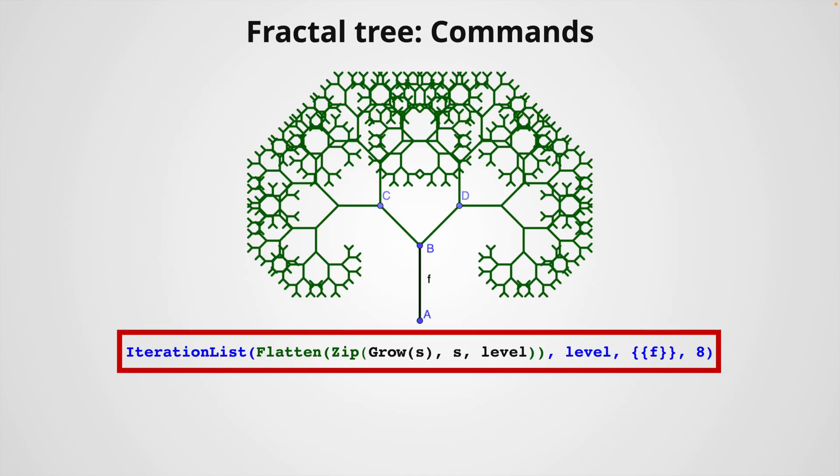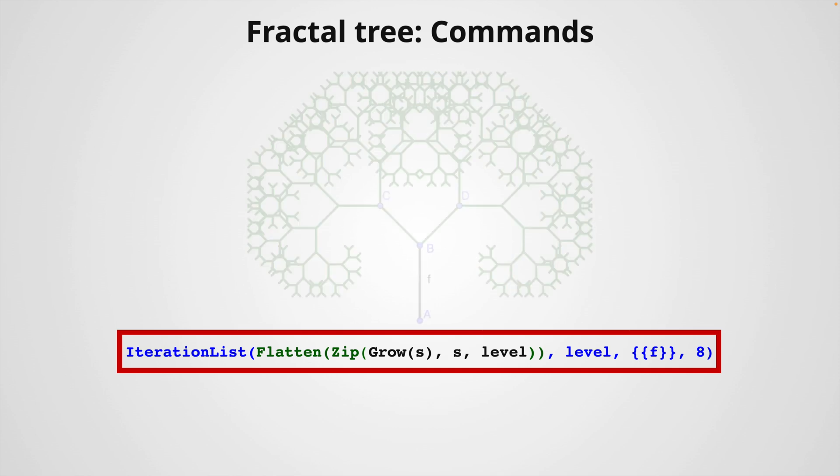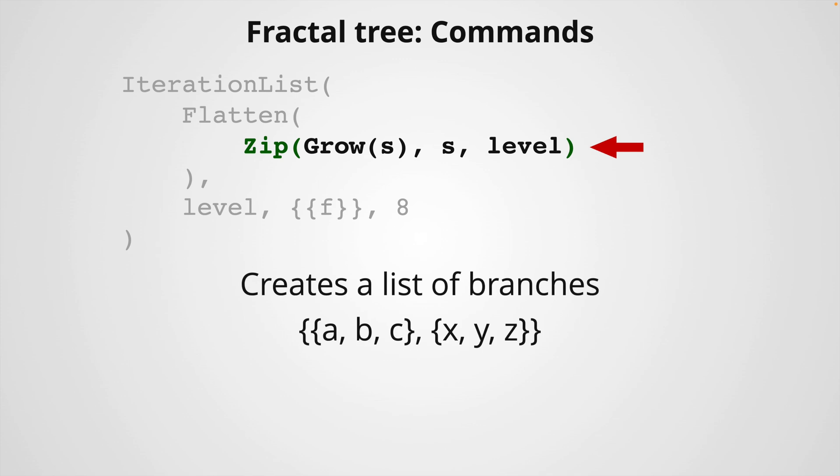I know this code looks quite intimidating, so let's break it up to understand what is going on. The zip command creates a list of branches using our tool to grow with a variable s, and that belongs to a list. In this case, it's named level.